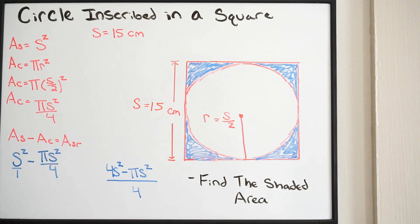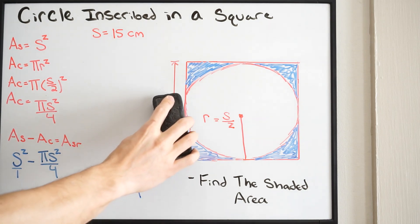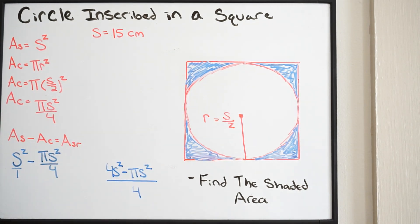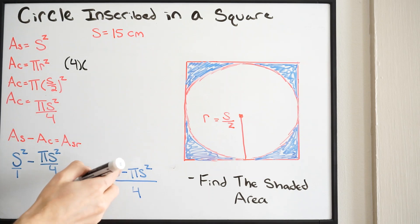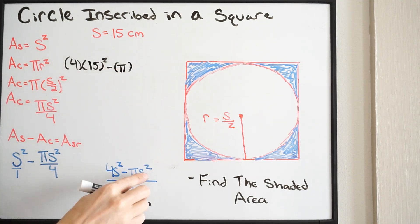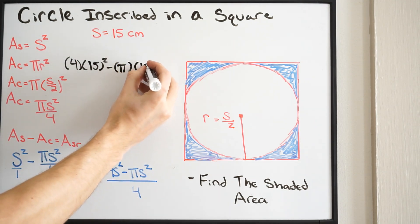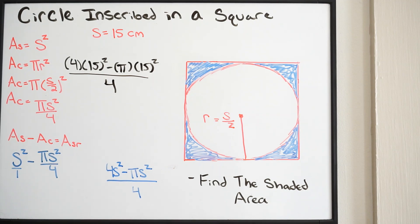Now we can go ahead and plug in 15 wherever we see an S — we did this in order to maintain accuracy. Plugging this in, we get 4 times 15 squared minus pi times 15 squared, all over 4. Let's go ahead and plug this into our calculator and see what we get.